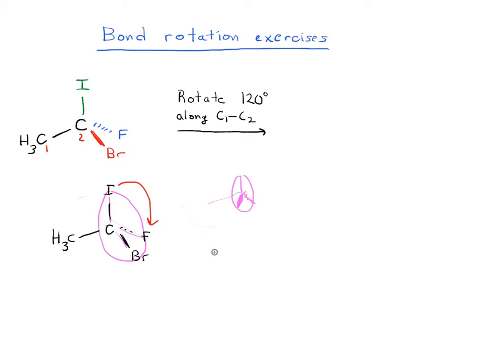120 degrees to where the F is. So the CH3C, the I is going to go where the F was, and the F is a dash, so that means the I is going to become a dash. Now the F is going to go where the BR is, so that means that where the BR was, we're now going to have an F, and the F is going to be a wedge.